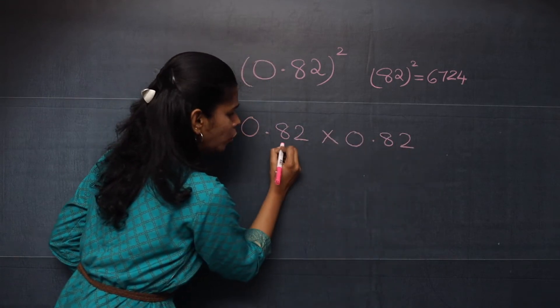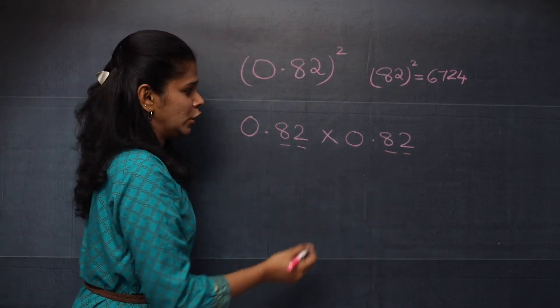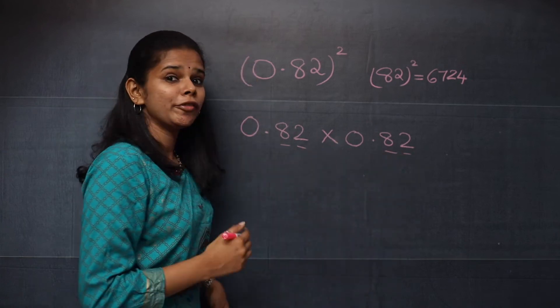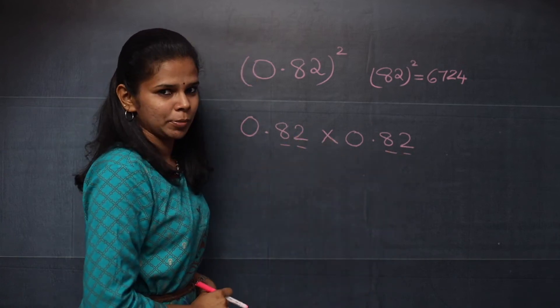Now, you will count the digits after the decimal point. So you found 1, 2, 3, 4. There are 4 numbers in total after the decimal point.